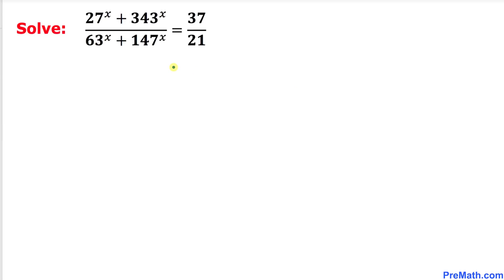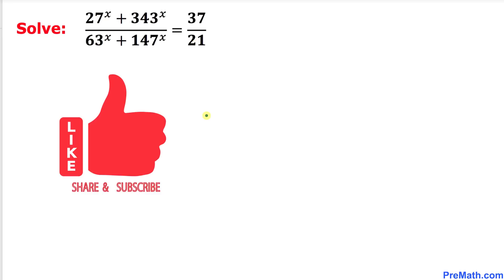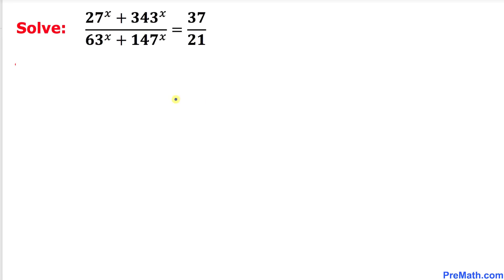Welcome to pre-math. In this video we are going to solve this given rational equation: 27 to the power x plus 343 to the power x, divided by 63 to the power x plus 147 to the power x, equals 37 divided by 21. Please don't forget to give a thumbs up and subscribe.